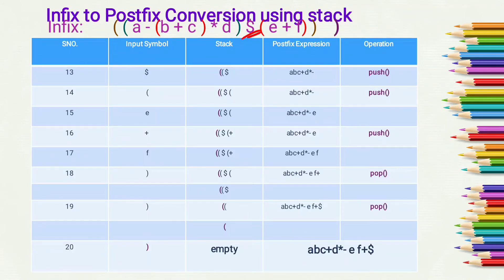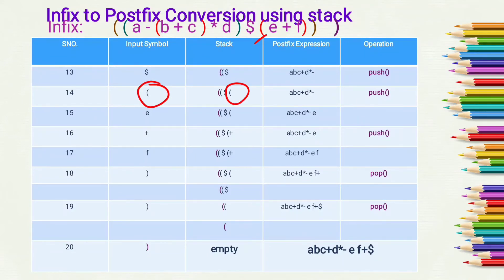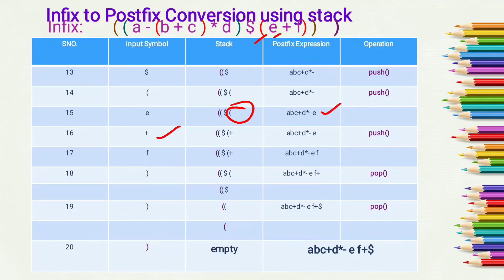The next input symbol is dollar ('$'). We push it into the stack as dollar has higher precedence than the open bracket, so we perform a push operation. Next is an open bracket, so we simply push it into the stack.